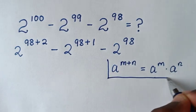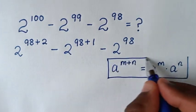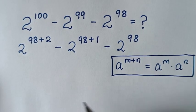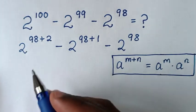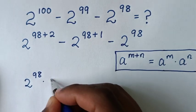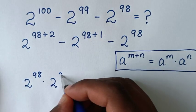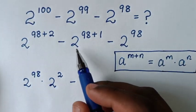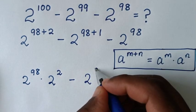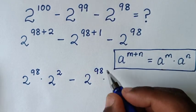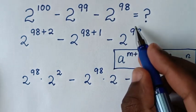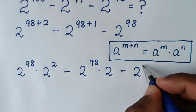So 2 power of 98 plus 2 becomes 2 power of 98 times 2 power of 2. Then minus 2 power of 98 plus 1 becomes 2 power of 98 times 2 power of 1, which is 2. Then minus 2 power of 98.